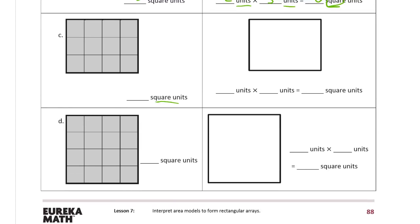So square units here again, how many squares are there? We have 1, 2, 3, 4, 5, 6, 7, 8, 9, 10, 11, 12, 12 square units.